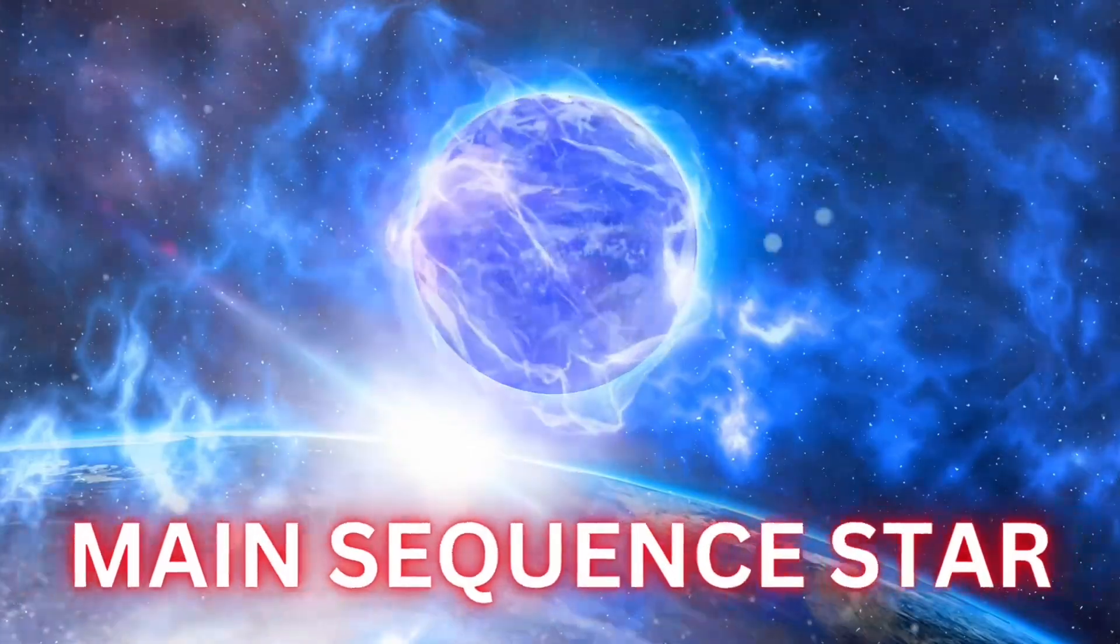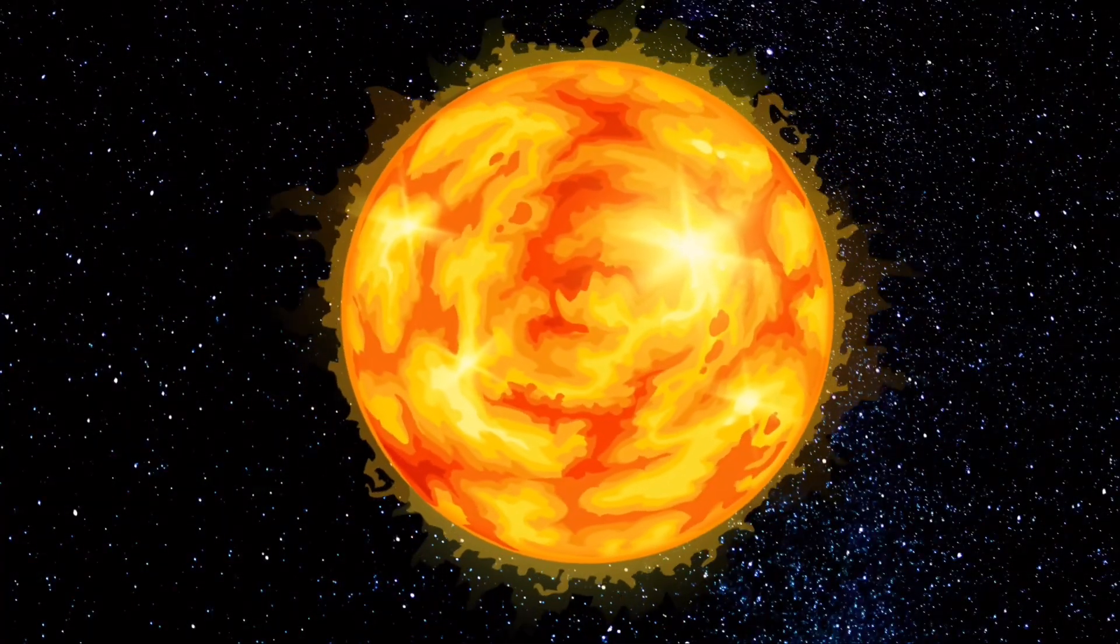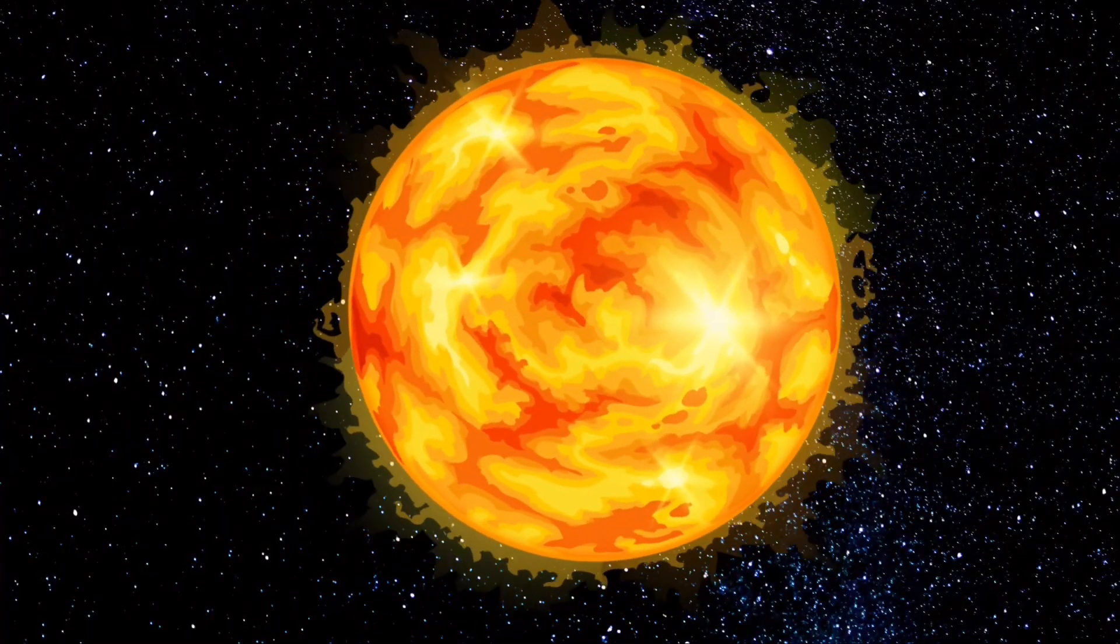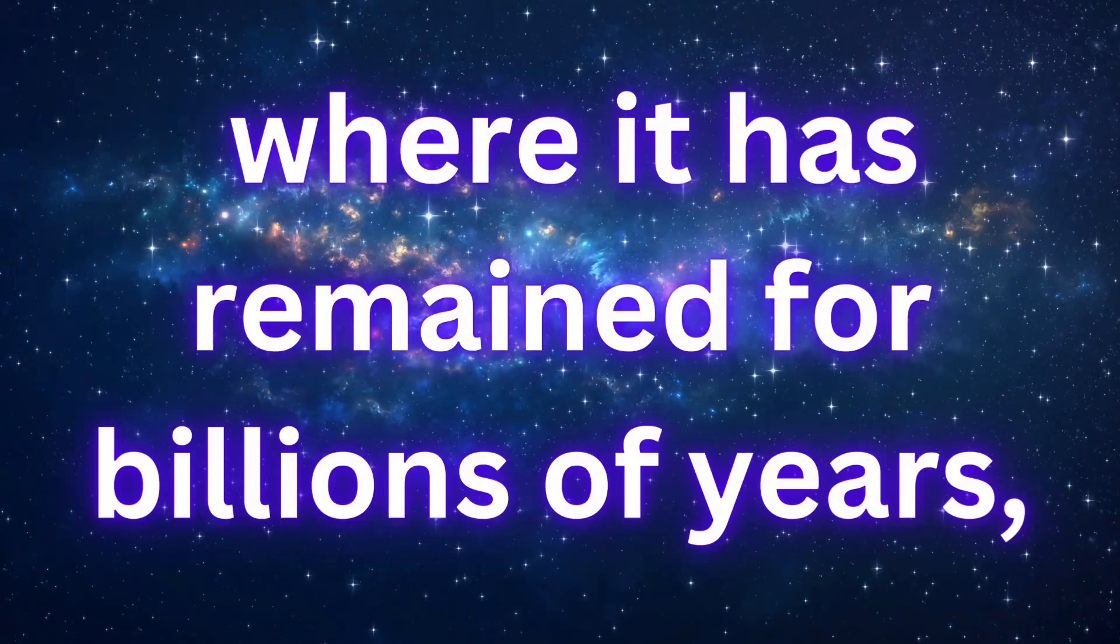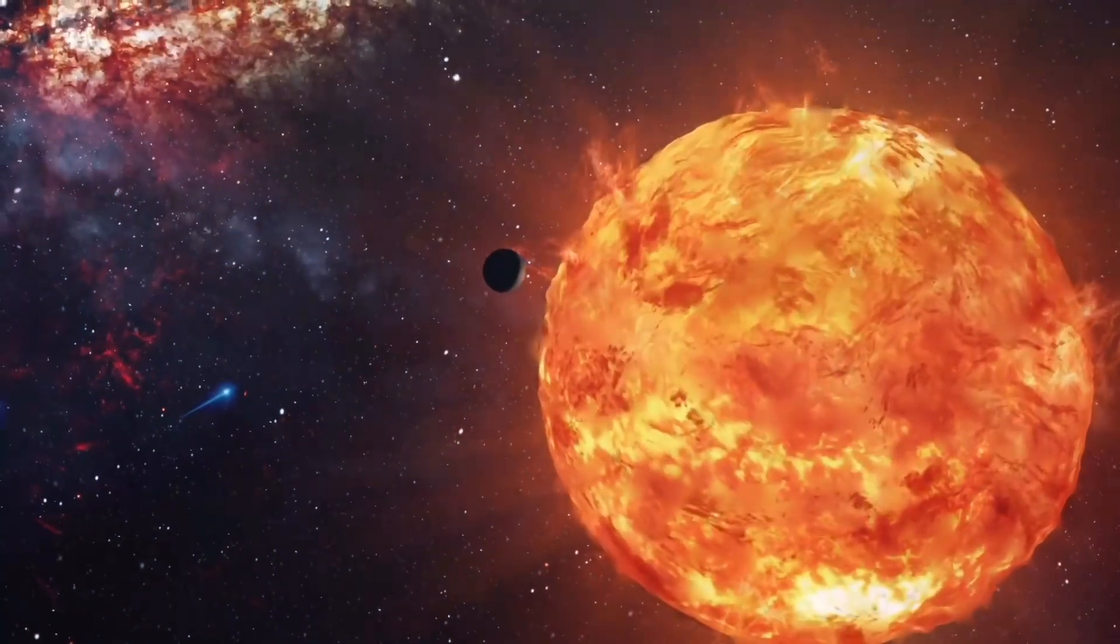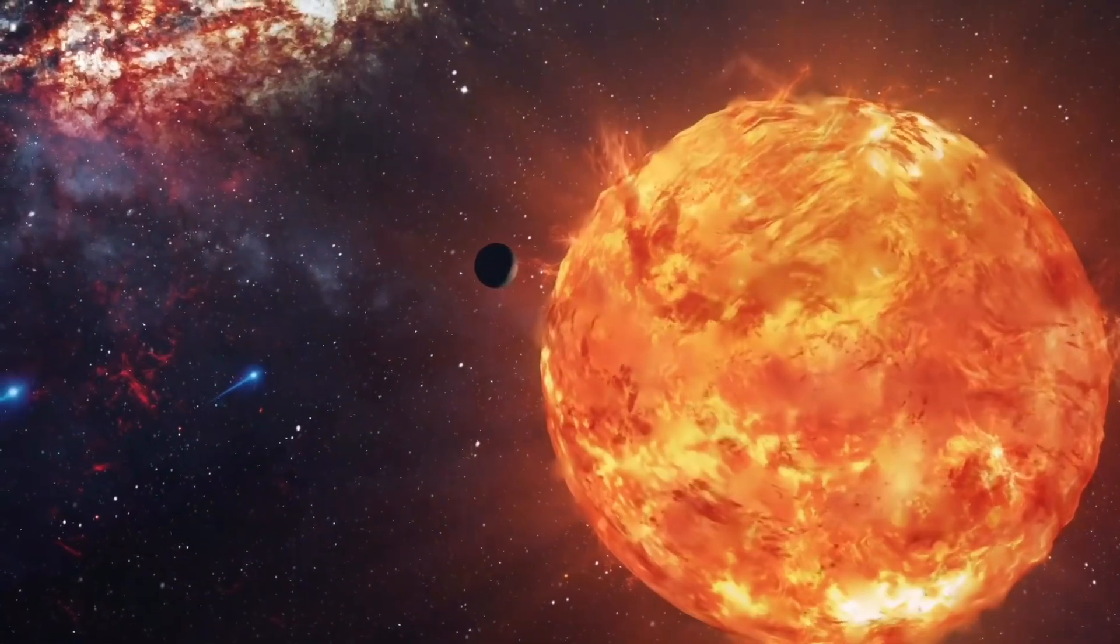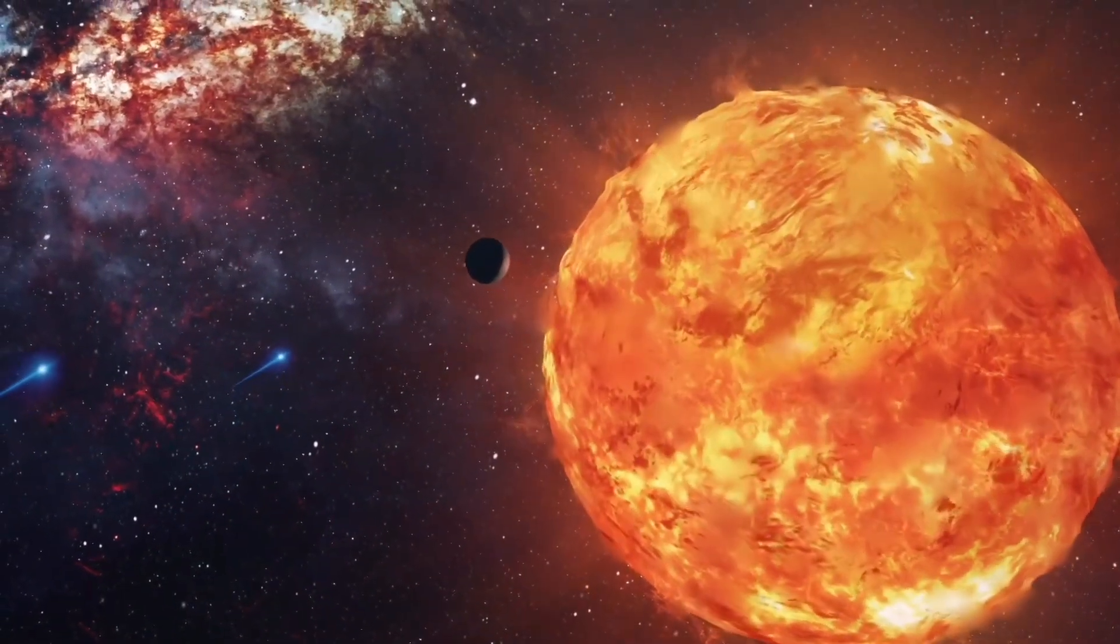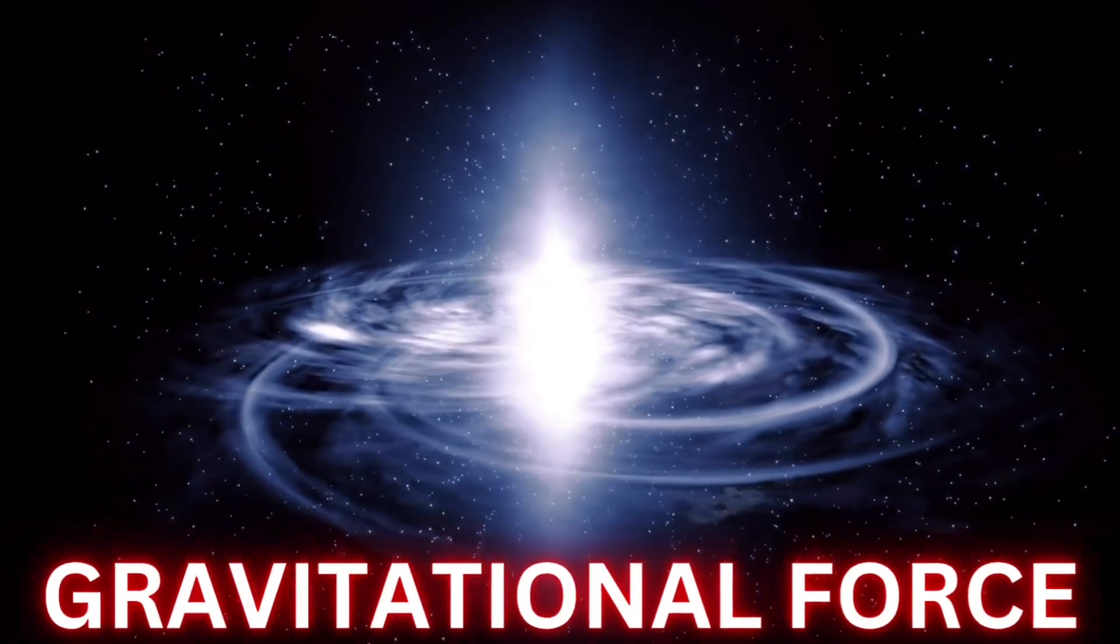Main sequence star: The Sun then entered the main sequence phase of its life cycle, where it has remained for billions of years, steadily fusing hydrogen into helium in its core and balancing the gravitational forces trying to compress it with the outward pressure from fusion.